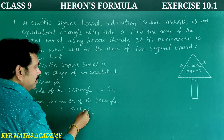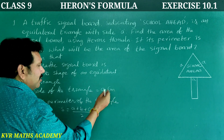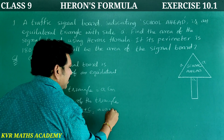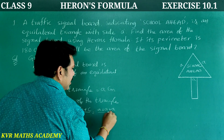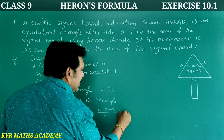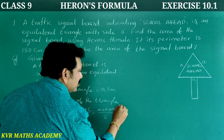Since it is an equilateral triangle, all sides are equal to A. So semi-perimeter S equals (A plus A plus A) divided by 2, which is 3A by 2.